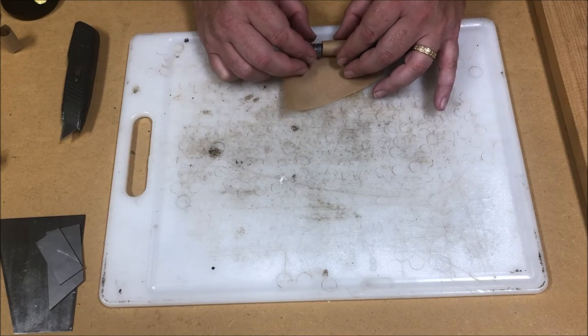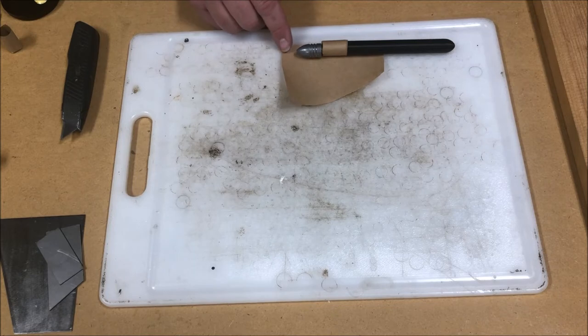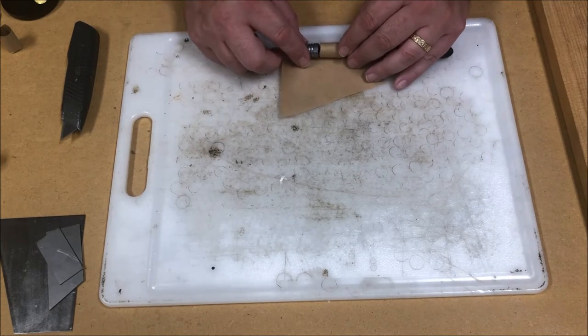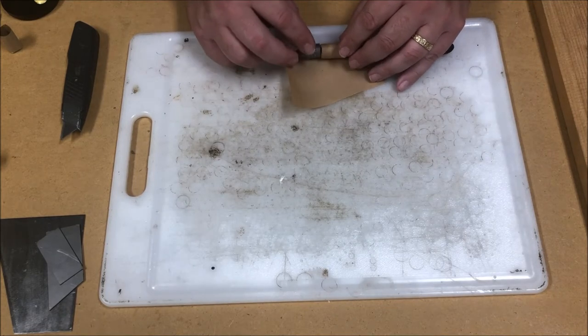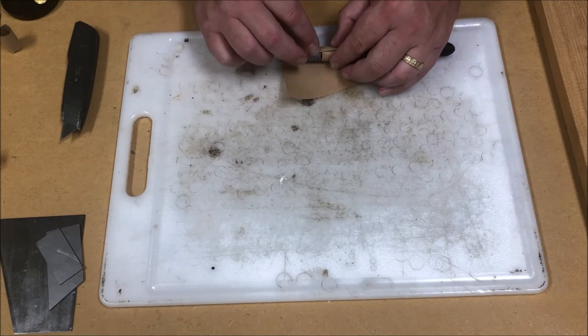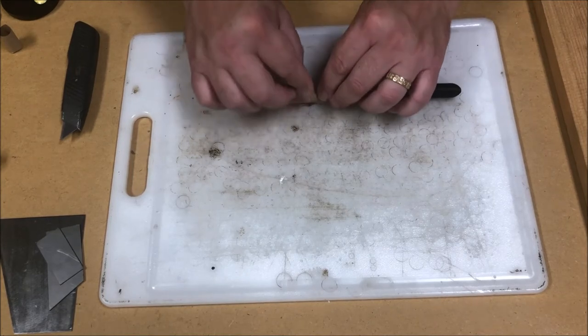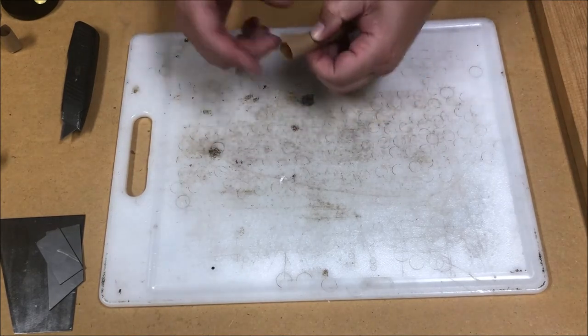So to complete the cartridge, you want to position the bullet and the powder cylinder as shown, and you want to leave a half inch or so of paper sticking out beyond the nose of the bullet. And then we're just going to wrap them together.